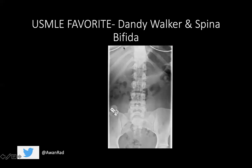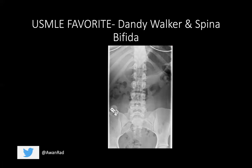A very high yield favorite is the association between Dandy-Walker and spina bifida. Spina bifida is failure of fusion of the posterior spinal elements. Looking at the lumbar spine at L5, there is a spinous process with lamina connecting on both sides. But at S1, there is a cleft between the lamina at the spinous process — this is spina bifida occulta, a lack of fusion of the posterior elements of the spine. Dandy-Walker can present as an incidental finding, as an enlarged head circumference in a child, or with signs of hydrocephalus.